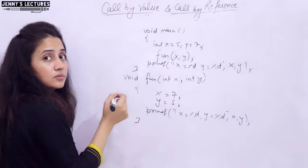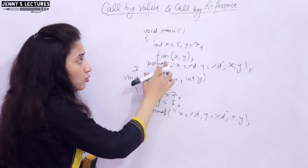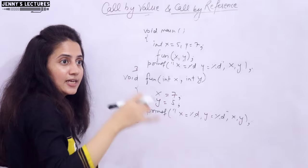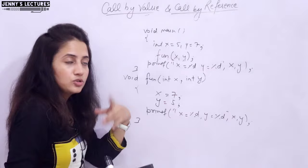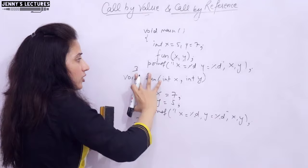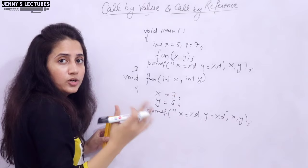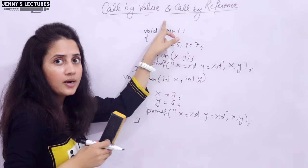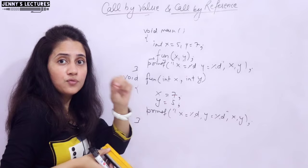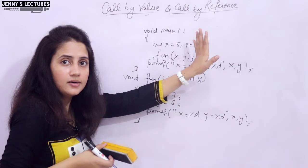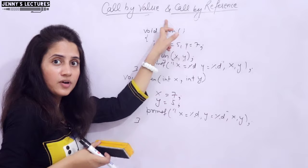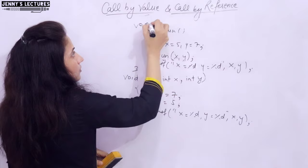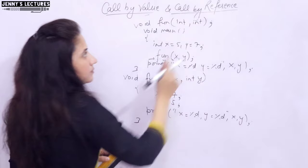Since I am defining the function after the function call, it is better to declare the function first to avoid an implicit declaration warning — as discussed in the function declaration video. If you define the function before main, there is no need to declare it separately. The declaration is simply: void fun(int, int) — you do not need to specify the parameter names, though you can write int a, int b if you prefer.